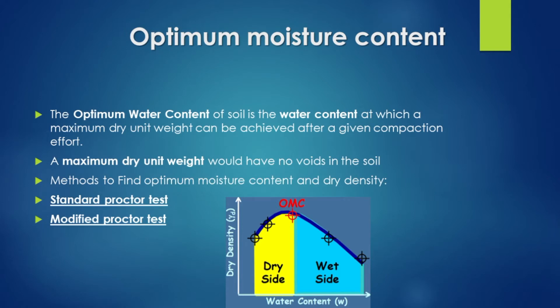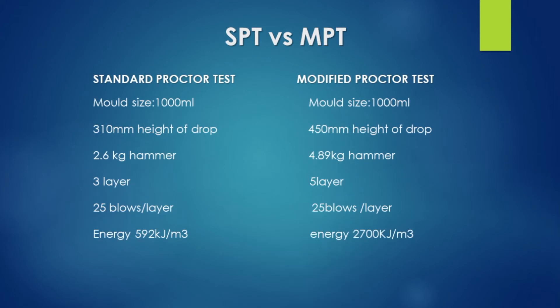We will find out using two methods. We will use the IS code standard method and the modified method. The standard and modified procedures are the same general process, but we change the compaction energy.